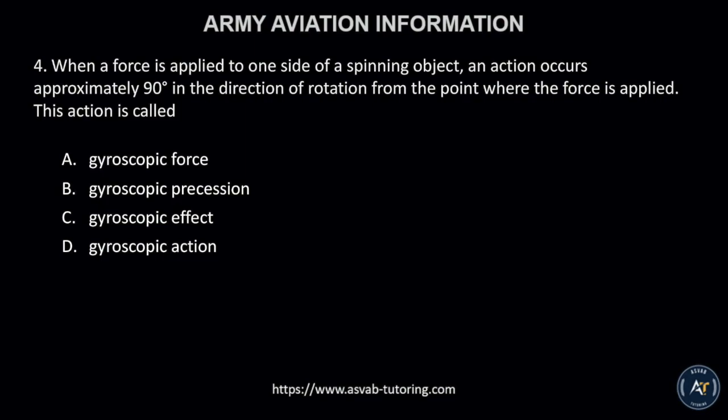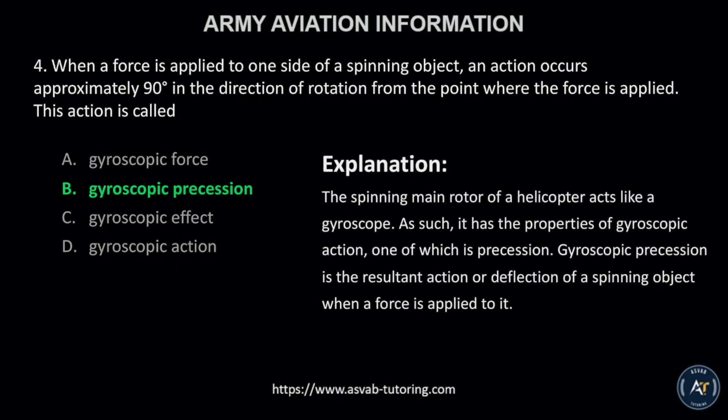Number 4. When a force is applied to one side of a spinning object, an action occurs approximately 90 degrees in the direction of rotation from the point where the force is applied. This action is called A, gyroscopic force; B, gyroscopic precession; C, gyroscopic effect; or D, gyroscopic action? The correct answer is letter B, gyroscopic precession. The spinning main rotor of a helicopter acts like a gyroscope. As such, it has the properties of gyroscopic action, one of which is precession. Gyroscopic precession is the resultant action or deflection of a spinning object when a force is applied to it.